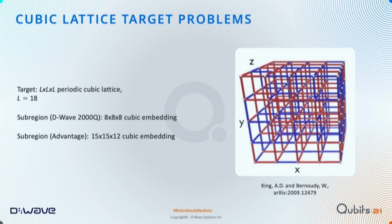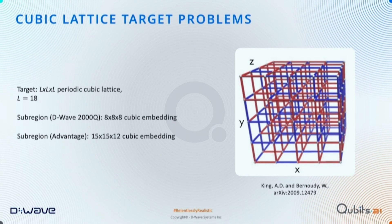The work I'm showing today is related to a cubic lattice target problem. We can study 15x15x12 cubic problems on Advantage directly, so to challenge the processor we'll study something twice the volume: 18x18x18. I'll consider specifically spin glass problems as the major subject — where couplings are assigned plus or minus one at random, leading to a frustrated problem with a very rich energy landscape. I'll also consider a ferromagnetic cubic lattice problem and a Pegasus-structured spin glass with chain length one, our highest-performing case.